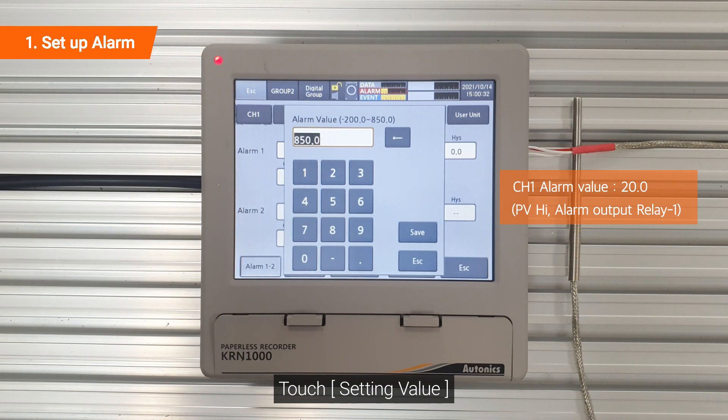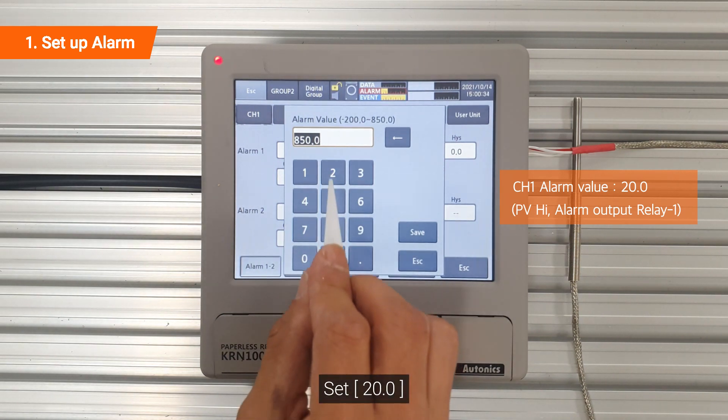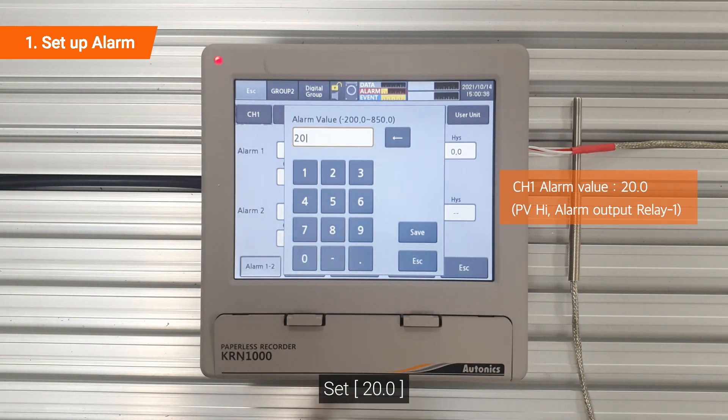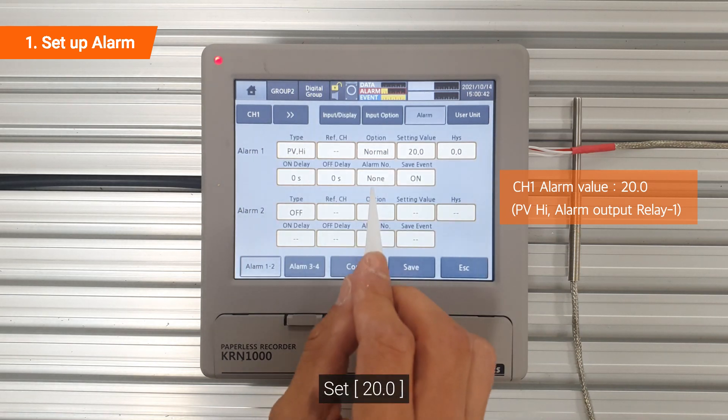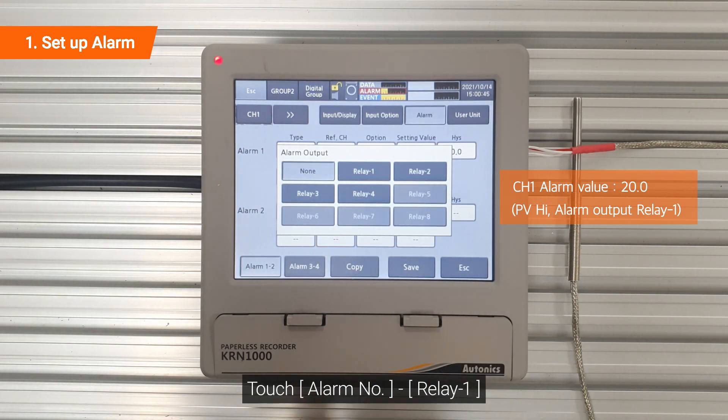Touch setting value. Set 20.0. Touch alarm number, relay dash 1.